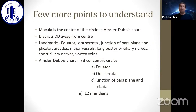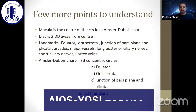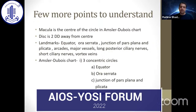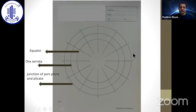The disc is two disc diameters away from the center. The landmarks are the equator, ora serrata, and junction of pars plana and pars plicata. These three are represented by the concentric circles in the Amsler-Dubis chart. Other landmarks include arcades, major vessels, long and short posterior ciliary nerves, and vortex veins. In the Amsler-Dubis chart, we see three concentric circles: the innermost is the equator, the middle is the ora serrata, and the outermost is the junction of pars plana and pars plicata. The chart is divided into 12 meridians like a clock, numbered 1 to 12.